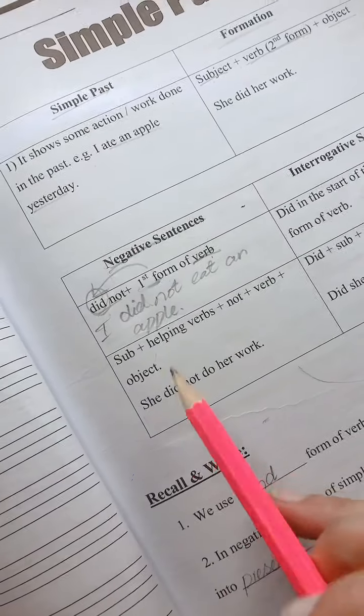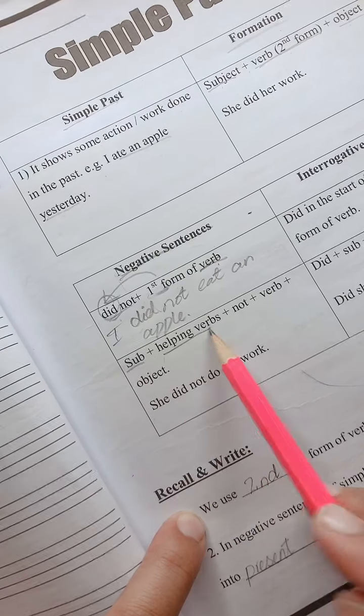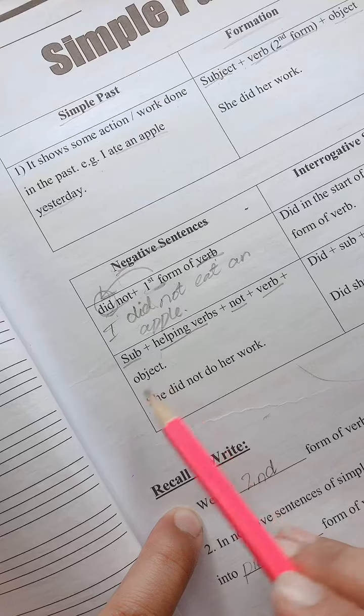You will see the form of verb. Under the form of verb: subject, helping verb, not, verb, and object.